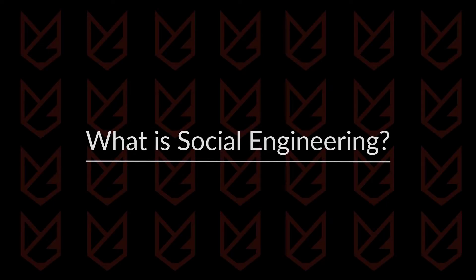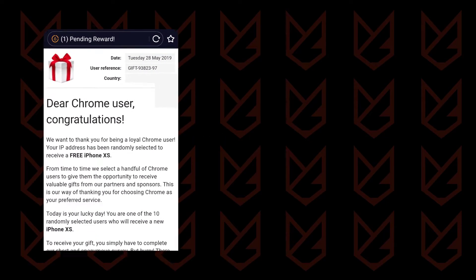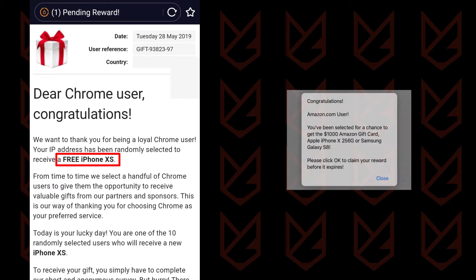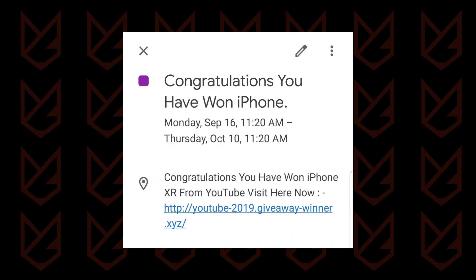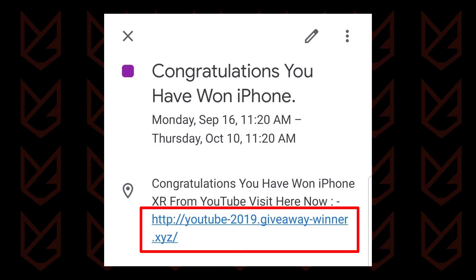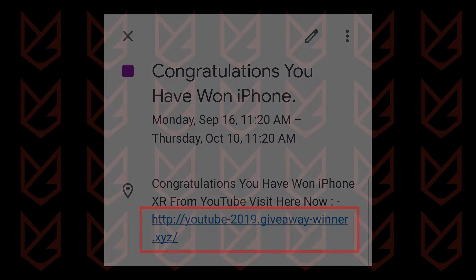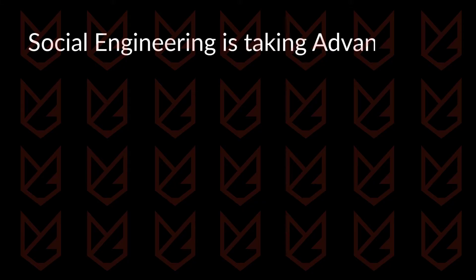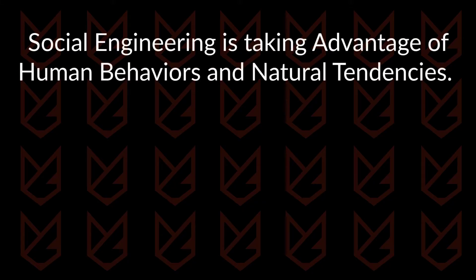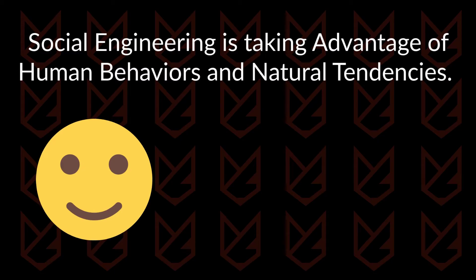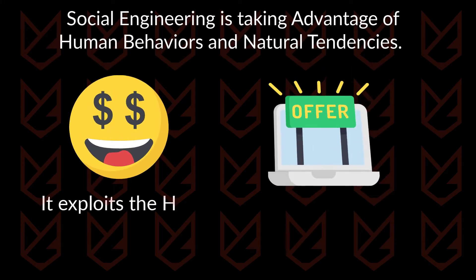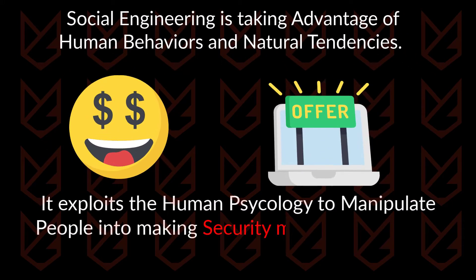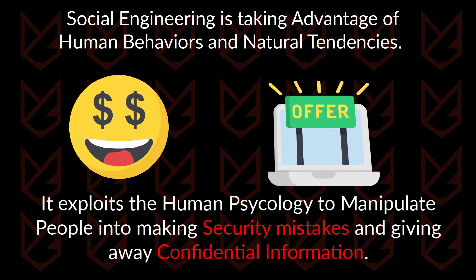What is social engineering? If you are an avid internet user, you might have encountered intriguing pop-ups and emails that say, "Congratulations, you've won an iPhone," or something similar. This is the trick used by exploiters to make you click on a link to introduce malware on your system. Social engineering is taking advantage of human behaviors and natural tendencies. The attacks are conducted by analyzing how users will react if a fake offer or scenario is presented before them, exploiting human psychology to manipulate people into making security mistakes and giving away confidential information. The attacks are executed by proposing offers that are too good to be true.